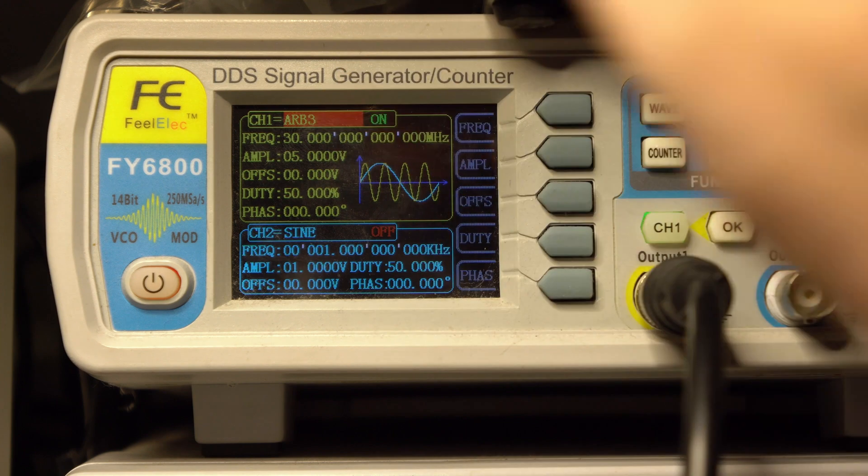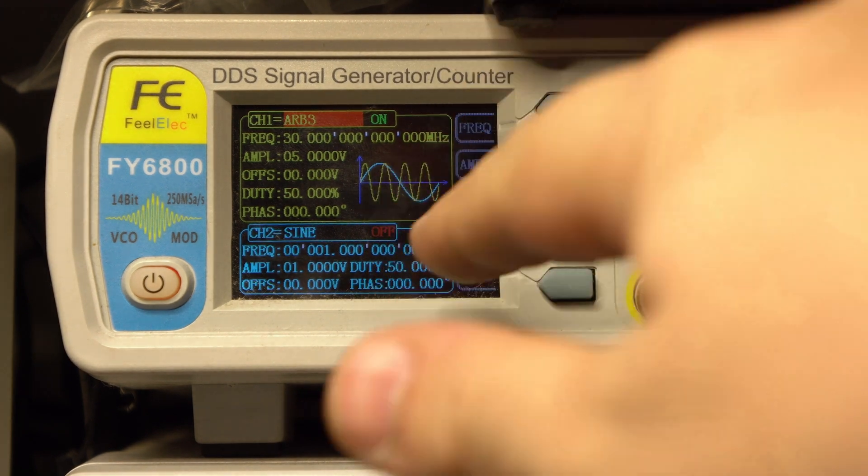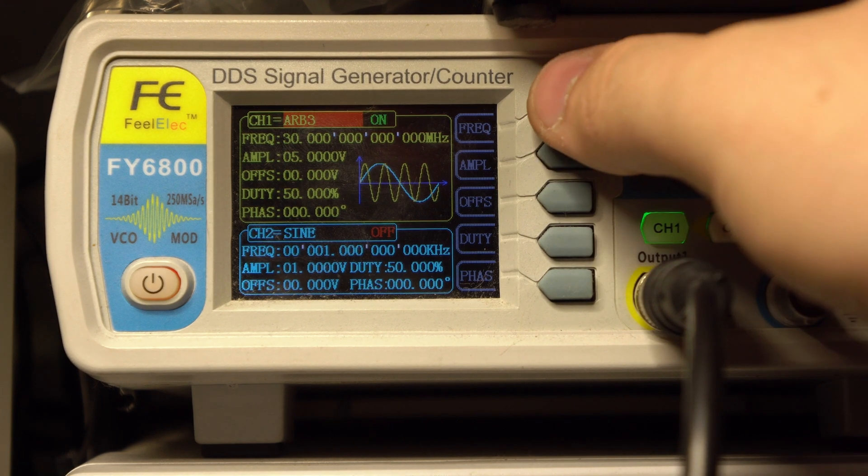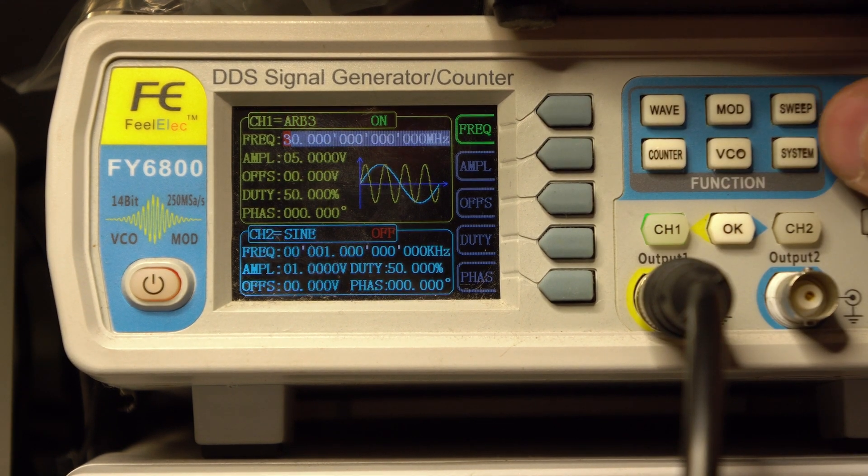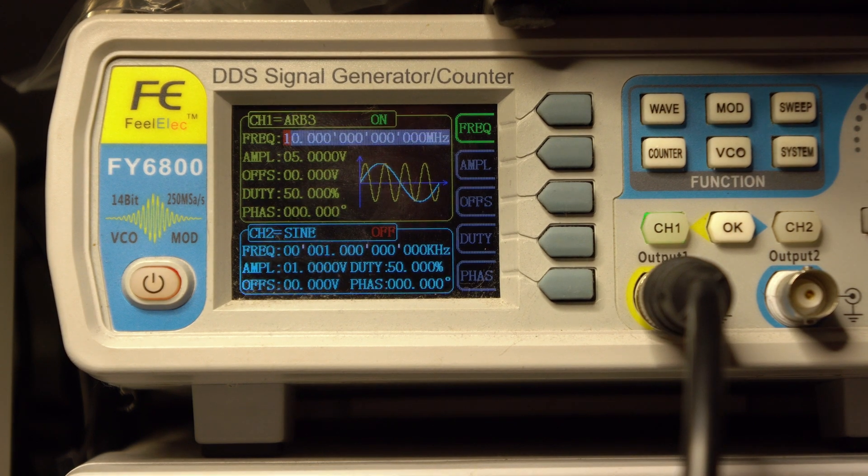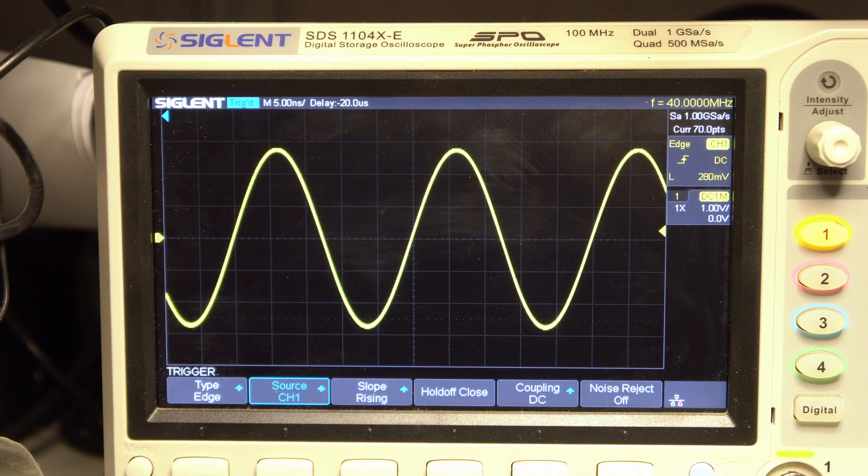Here at the signal generator we click wave and select three. As you can see it's a four cycle sine wave. So let's go to frequency and we change - when we set 10 megahertz it's outputting 40 megahertz. So there we go, you see on the top right 40 megahertz.